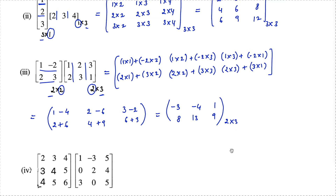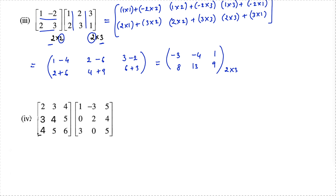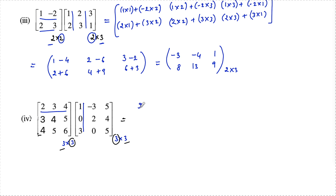Now let's do the fourth one. The first matrix is of order 3 by 3 and the second matrix is also of order 3 by 3. The number of columns in the first matrix equals the number of rows in the second, so the product matrix will also be 3 by 3 with 9 elements total. First row with first column: 2 into 1 is 2, 3 into 0 is 0, and 4 into 3 is 12.